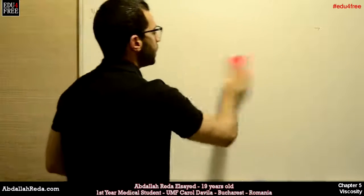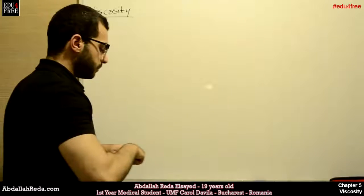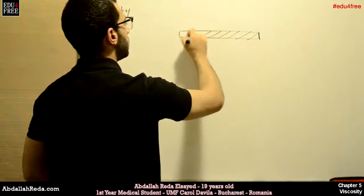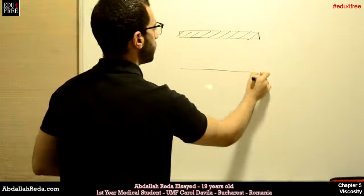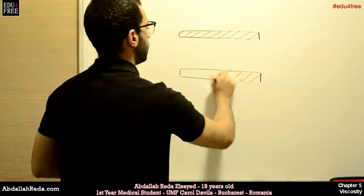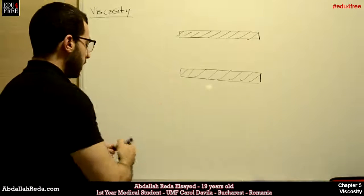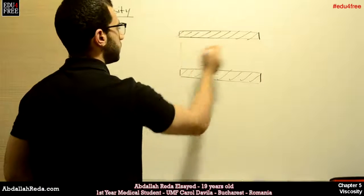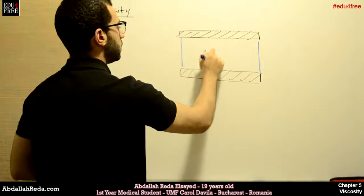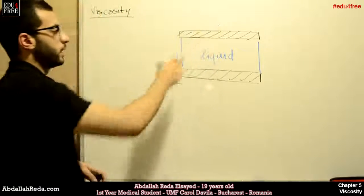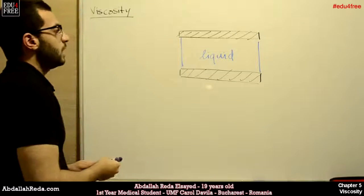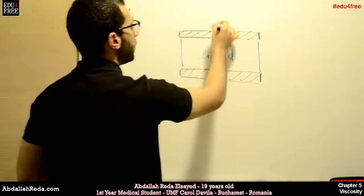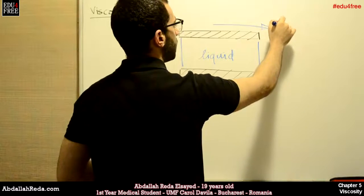We can explain this in an easier manner. We will consider two layers of a solid object with a liquid trapped in between. One of these layers will be static, and the other one will move in one direction with a velocity v.